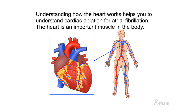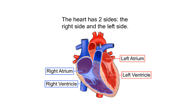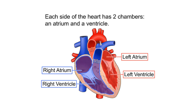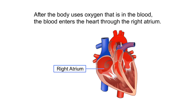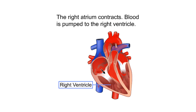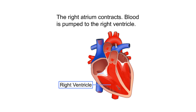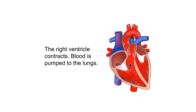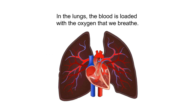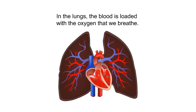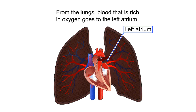The heart. Understanding how the heart works helps you understand cardiac ablation for atrial fibrillation. The heart is an important muscle in the body. It has two sides — the right side and the left side. Each side has two chambers: an atrium and a ventricle. After the body uses oxygen in the blood, blood enters the heart through the right atrium. The right atrium contracts, pumping blood to the right ventricle, which then pumps blood to the lungs.